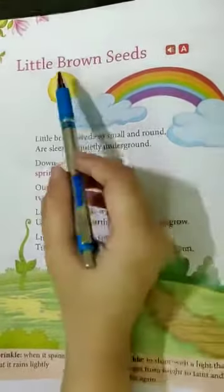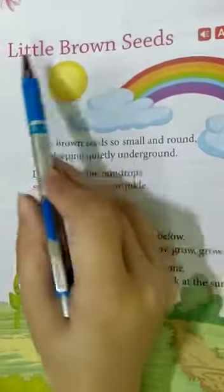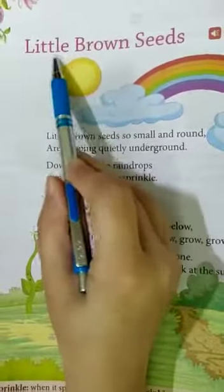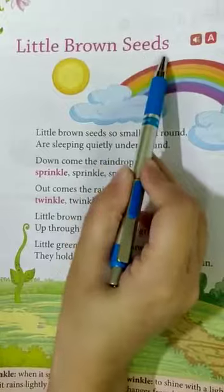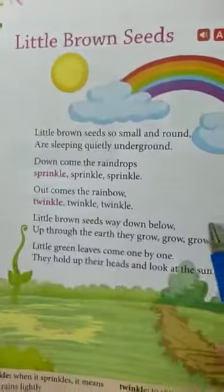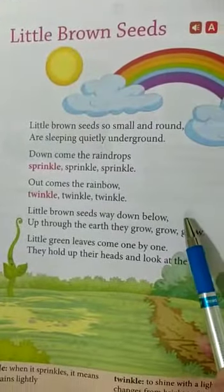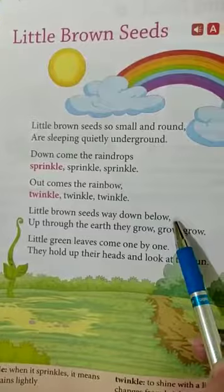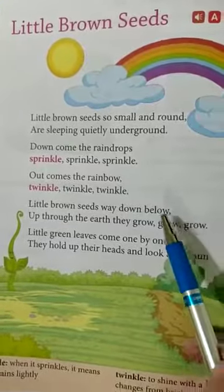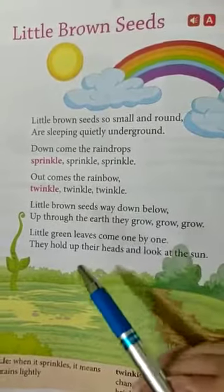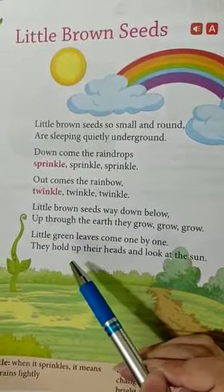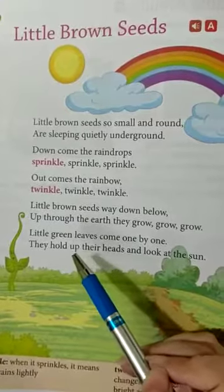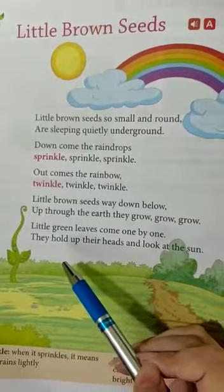The name of the poem is Little Brown Seeds. Little means small, brown is a color, and seeds means beige. This poem is all about seeds. When we sow seeds in the soil, then it becomes a plant.